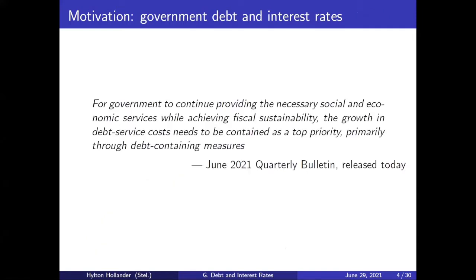But that's not the main thing I'm going to be talking about. I want to take a closer look at the relationship between government debt and interest rates. Just today, the quarterly bulletin released by the South African Reserve Bank highlighted that the growth in debt service costs needs to be contained as a top priority for fiscal sustainability, primarily achieved through debt-containing measures. So this link between fiscal sustainability and interest rates is really at the forefront of the issue we are facing at the moment.